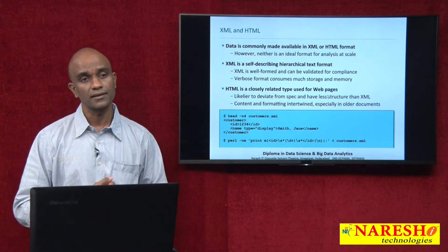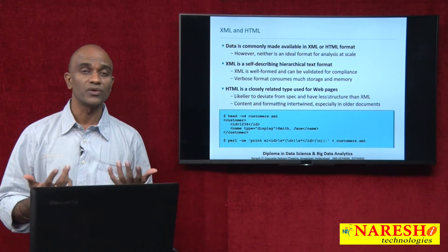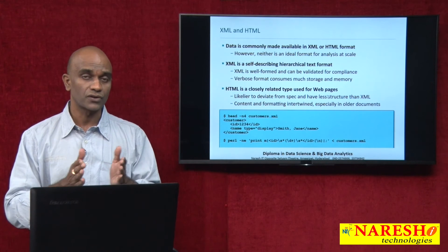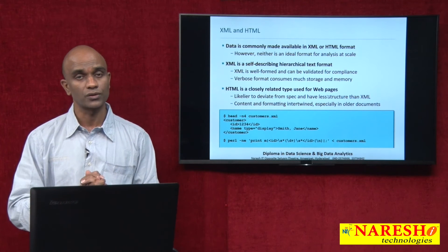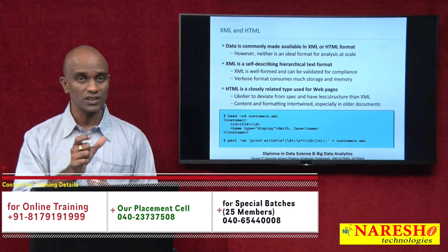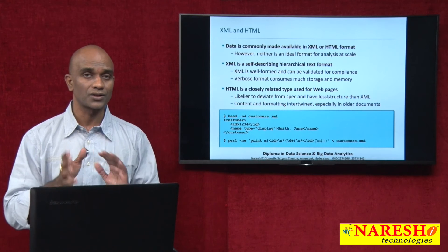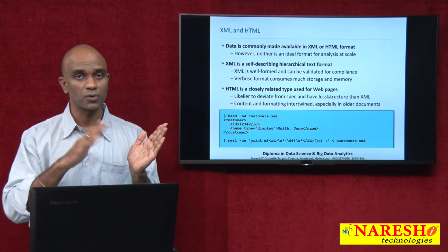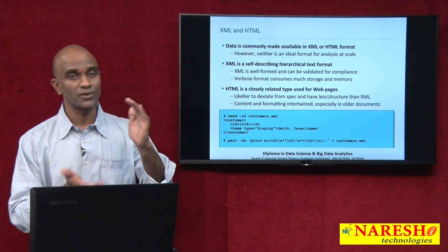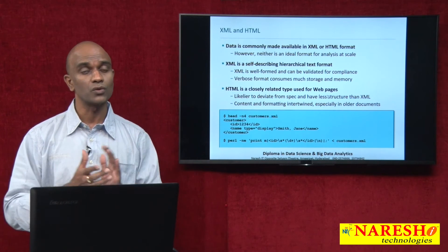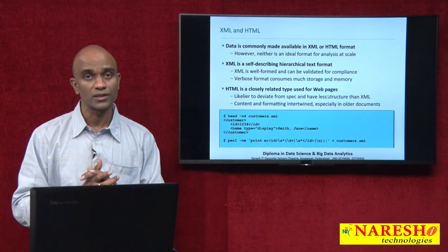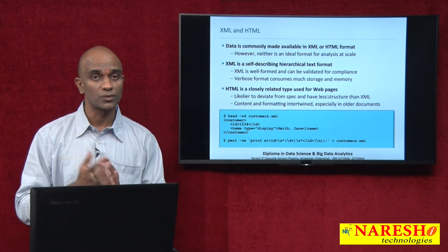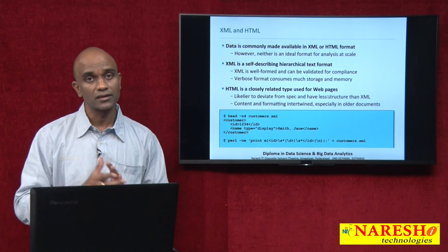Neither XML nor HTML is an ideal format for analysis at scale — they tend to be very verbose. We need to extract the right information from the source and keep only what we need. For example, each Twitter tweet is in the form of a JSON with about 200 to 300 attributes. For a simple sentiment analysis, we might need only a single field, but we have 200 to 300 other attributes. At large scale — when looking at years of data — the data really tends to get large, so extracting just the needed text is what we would like to do.